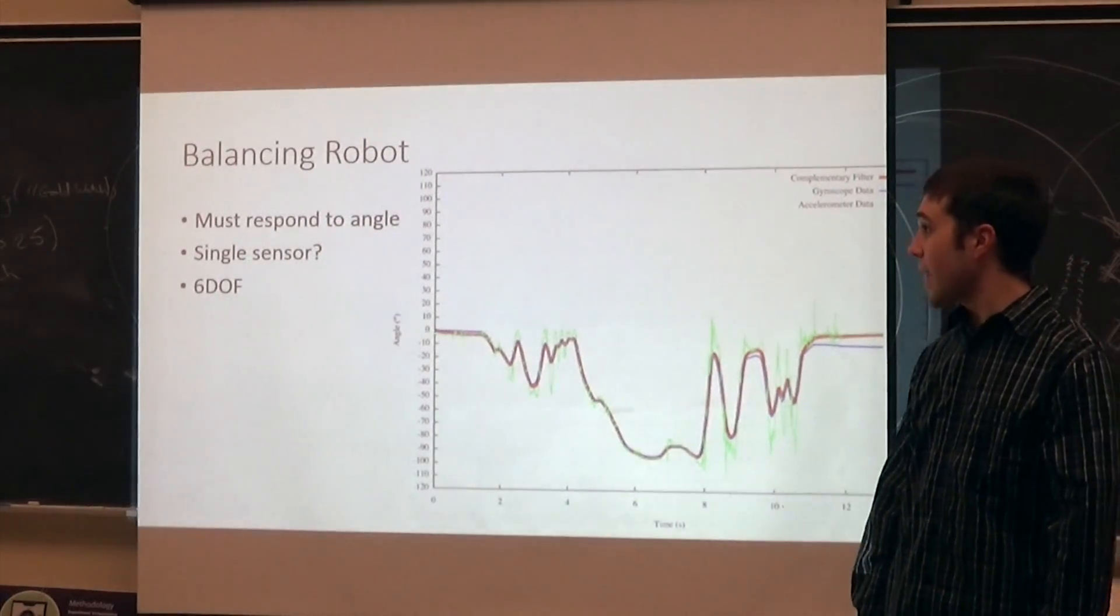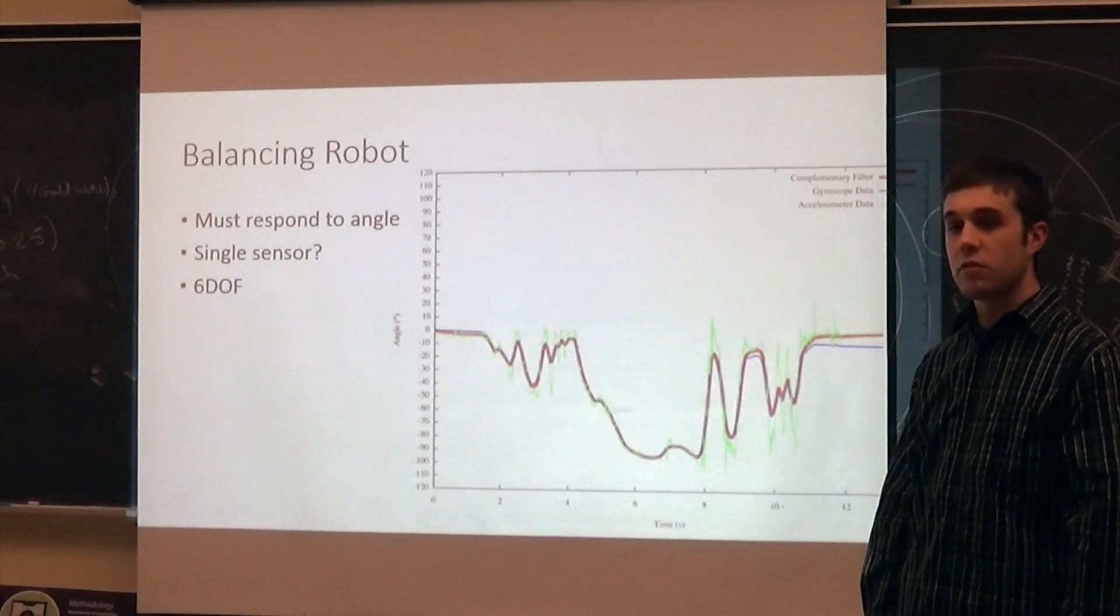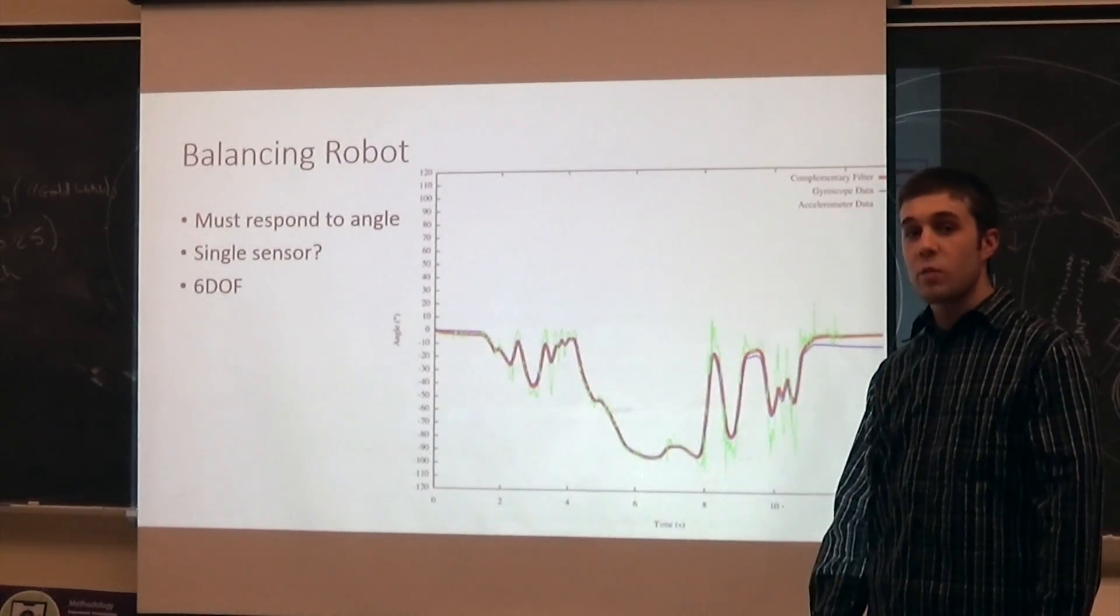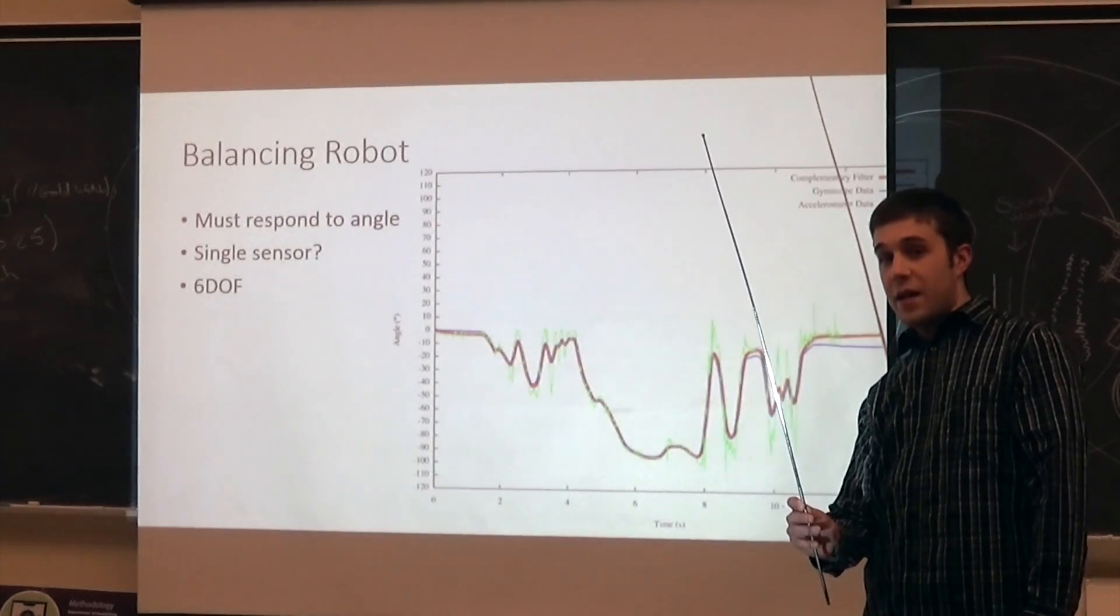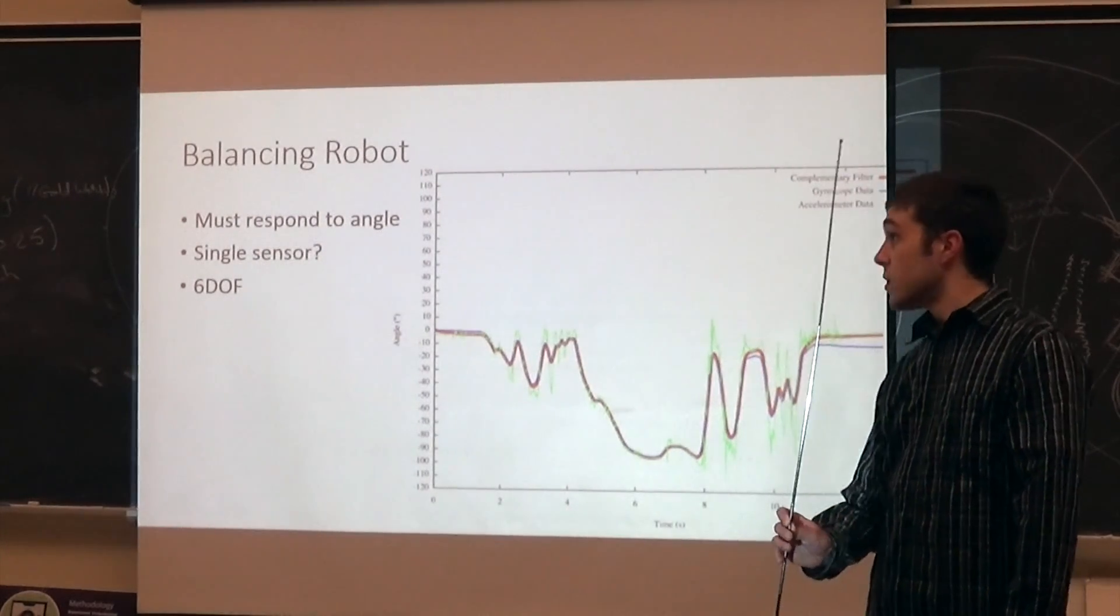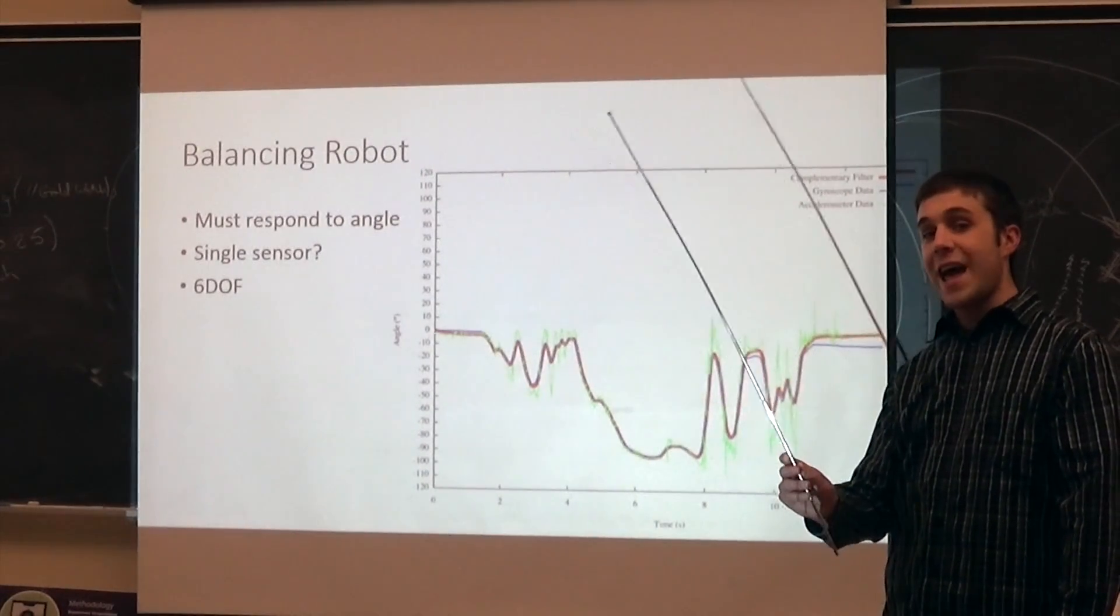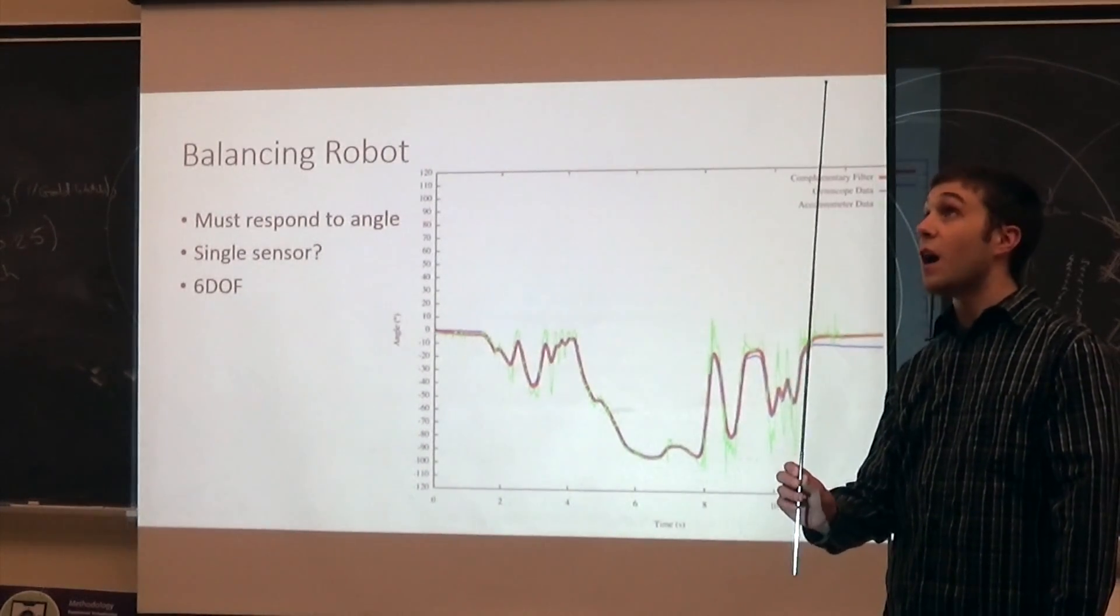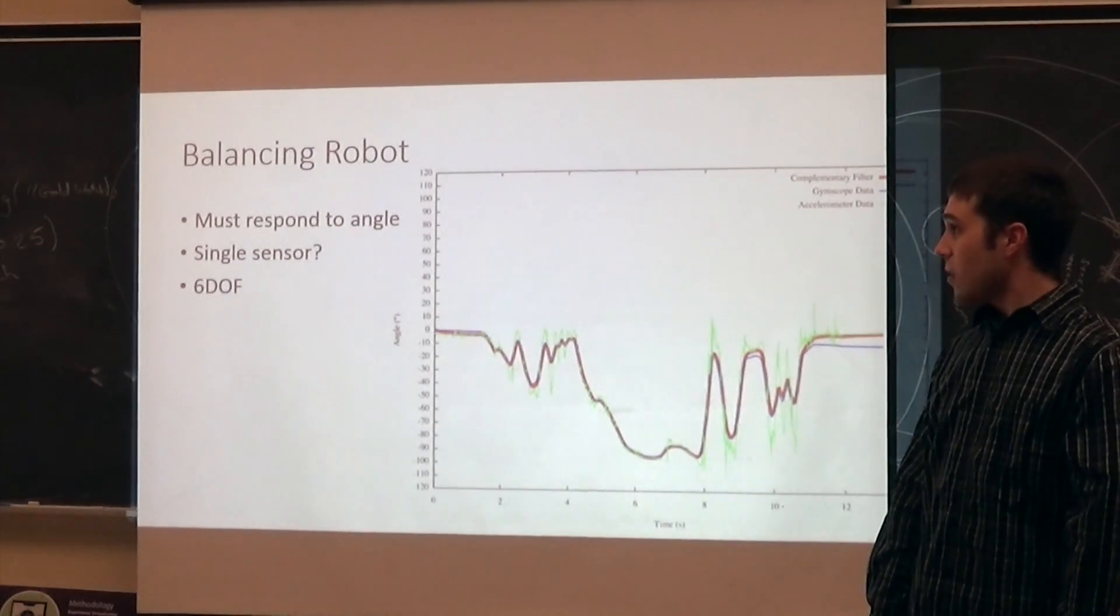Today I'm going to talk to you about balancing robot. It must respond to the angle of the robot. Naturally, we want to be at 90 degrees, straight up and down. If we were here, it would not be balanced. We want to be able to sense where we are and account for that and then correct for it.